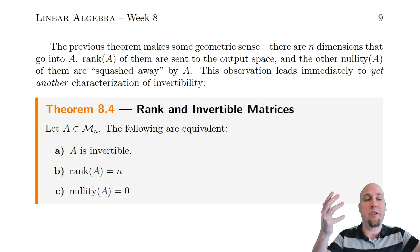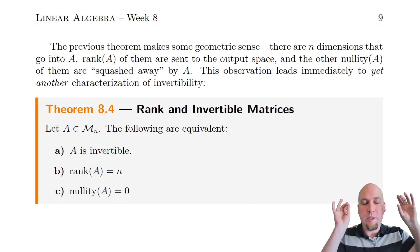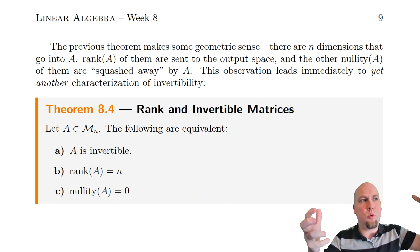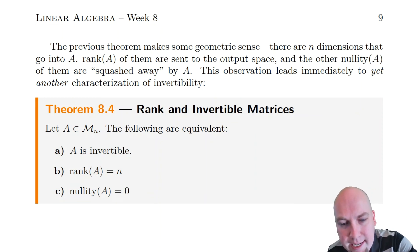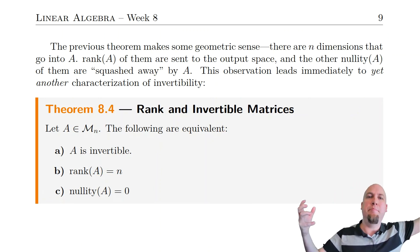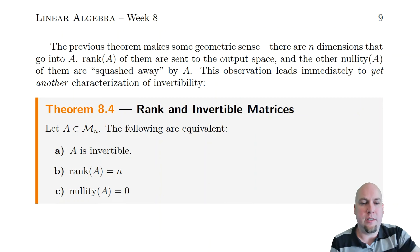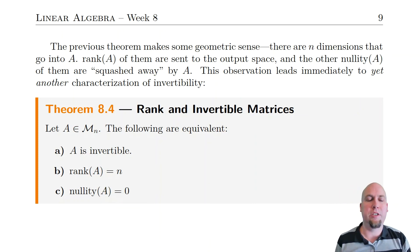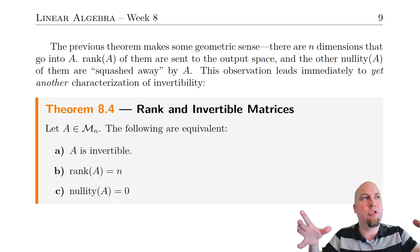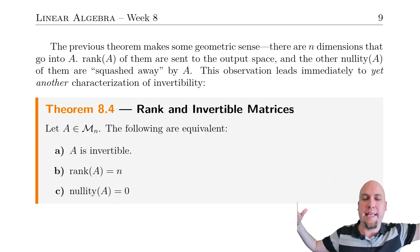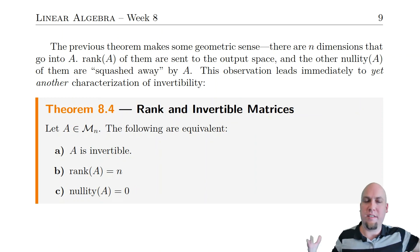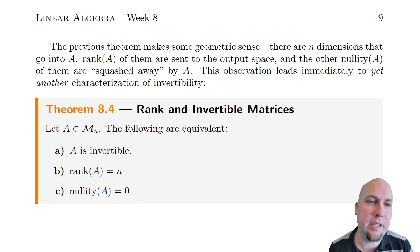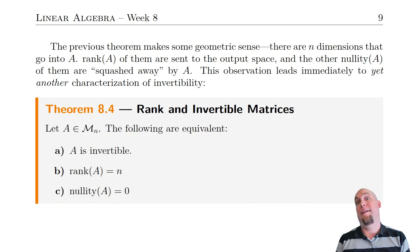This relates back to our geometric interpretation of invertibility: a matrix is invertible if and only if it doesn't squash away any information — it doesn't squash any dimensions away. Think of the nullity as how many dimensions are squashed away by that matrix; a matrix is invertible if zero dimensions are squashed. Think of the rank as how many dimensions of information are kept; a matrix is invertible if and only if it keeps all n dimensions of information. Alrighty, that does it for this week — rank and nullity of a matrix. I'll see you next week when we start talking about determinants of a matrix.